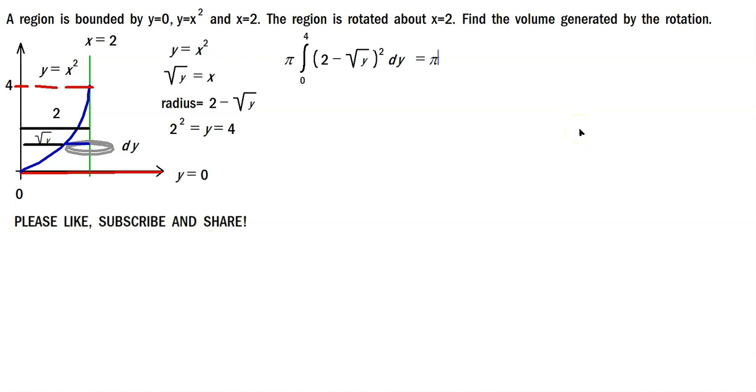All right, then we can expand the integrand, so pi, and then the definite integral from 0 up to 4 here, and that's going to be the following, 4 minus, you're going to do 2 times the root of y double, that's 4 times the root of y, and at the end, the root of y squared is going to be just plus y, and then dy this way.